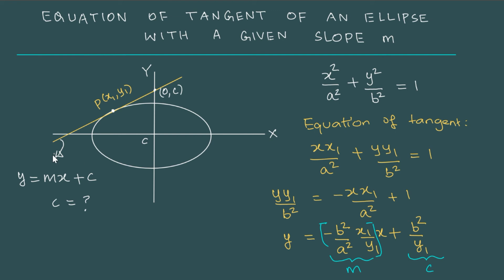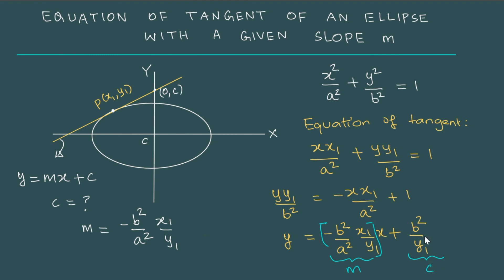Looking at the diagram, there is a minus sign, but because x1 is negative here — we are in the second quadrant, so x1 is negative — this will come out to be positive, which is consistent. So the value of m in terms of x1 and the ellipse parameters is m = −(b²/a²)·(x1/y1), and c = b²/y1. Using this, we should be able to get the value of c.